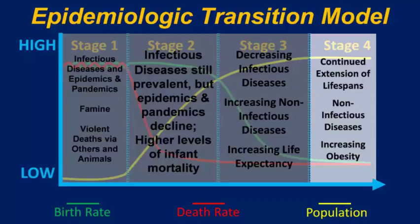Some say China is transitioning to stage four. One thing we're seeing in China is something we also have in the United States: increasing obesity. A lot of that's related to diets with higher fat content combined with decreasing physical activity. This is occurring across all age groups — childhood obesity is becoming a bigger global issue as more countries transition through this model. Diabetes is also on the rise. A lot of this relates to advancements in technology making it easier to access unhealthy food from anywhere in the world.